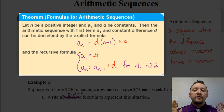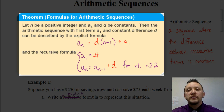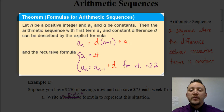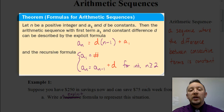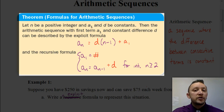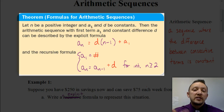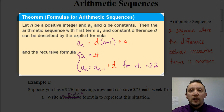If I wanted to find the first five or first ten terms of a sequence, the explicit formula would be a little more time-consuming, and the recursive formula would be more beneficial because it gives us those terms recursively.